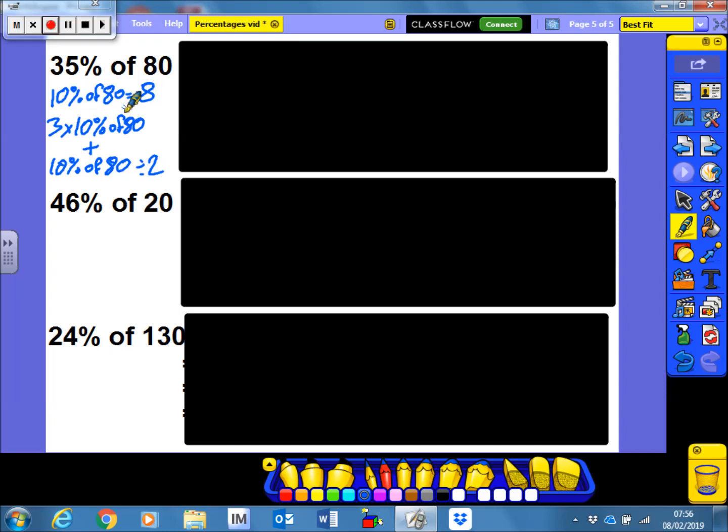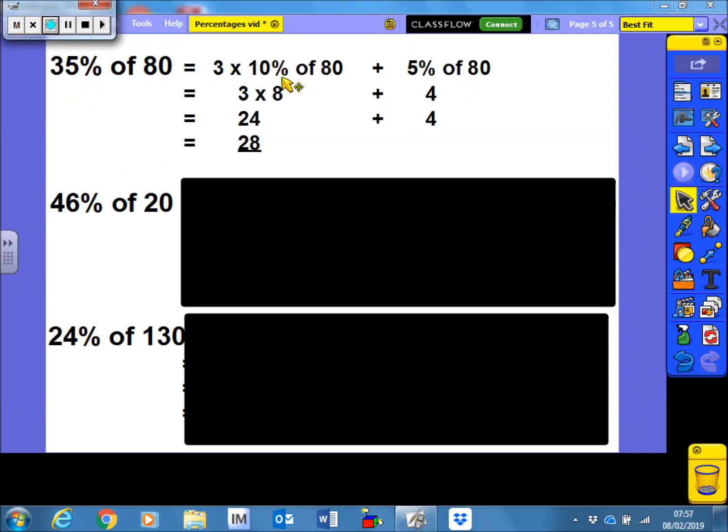So, pause the video and try it yourself if you want, and I'll reveal the answer in just a second. Okay, so we have 3 lots of 10% of 80, which is 3 times 8, with 10% of 80 as 8. So that's 24 plus 5% of 80, which is 4. Add them together, we get 28.